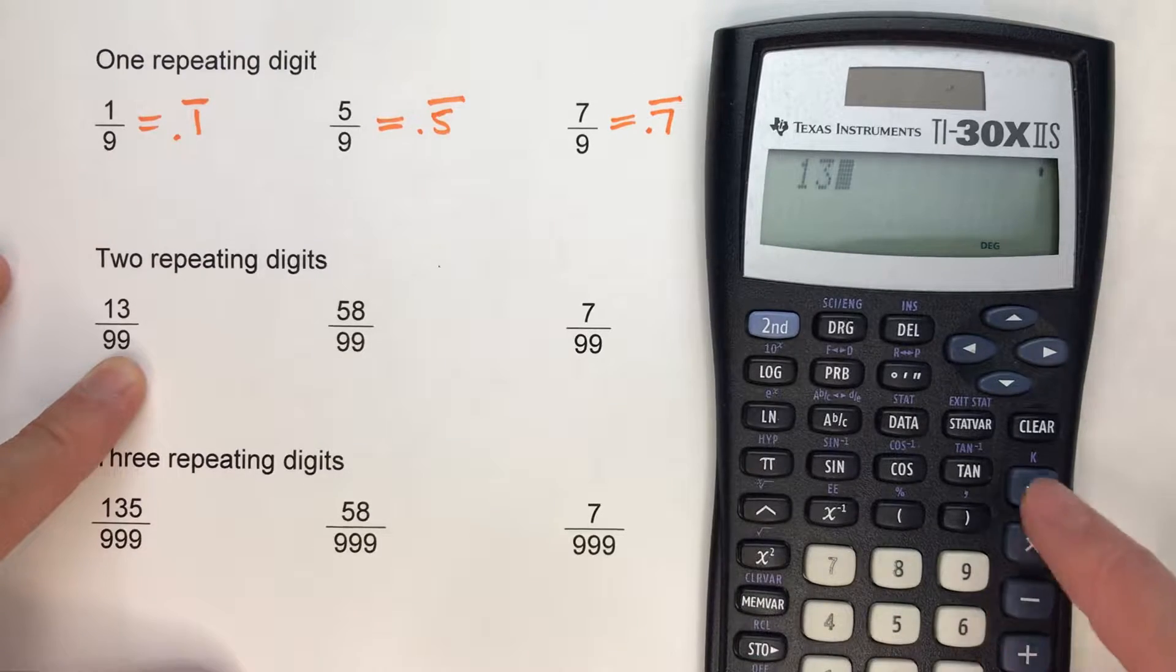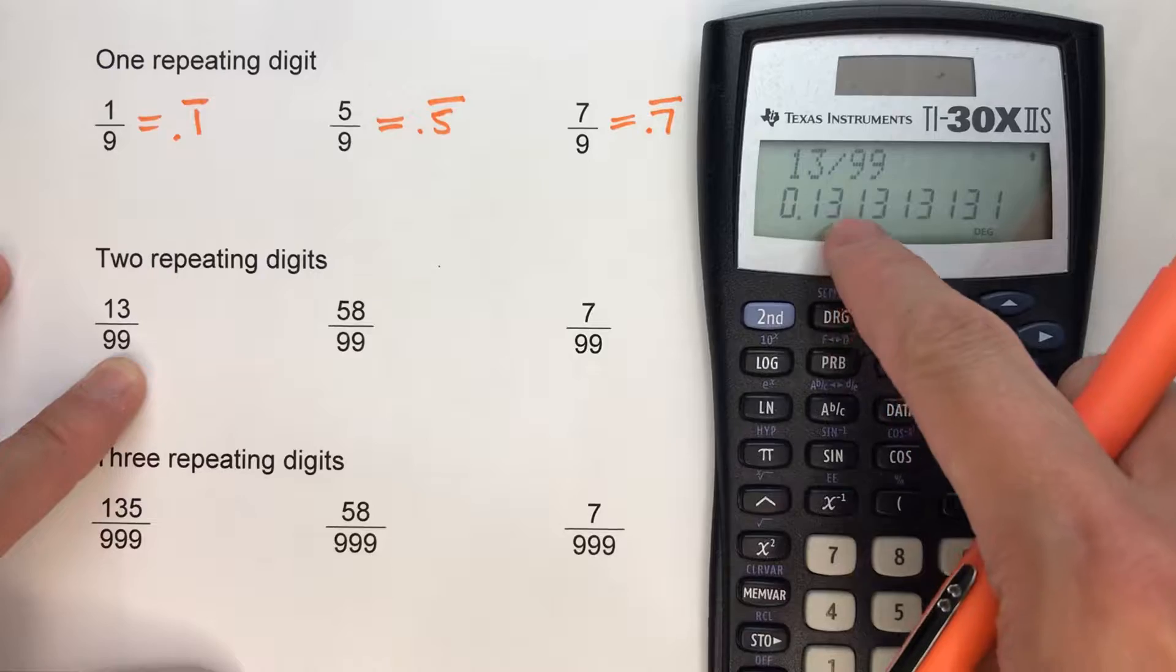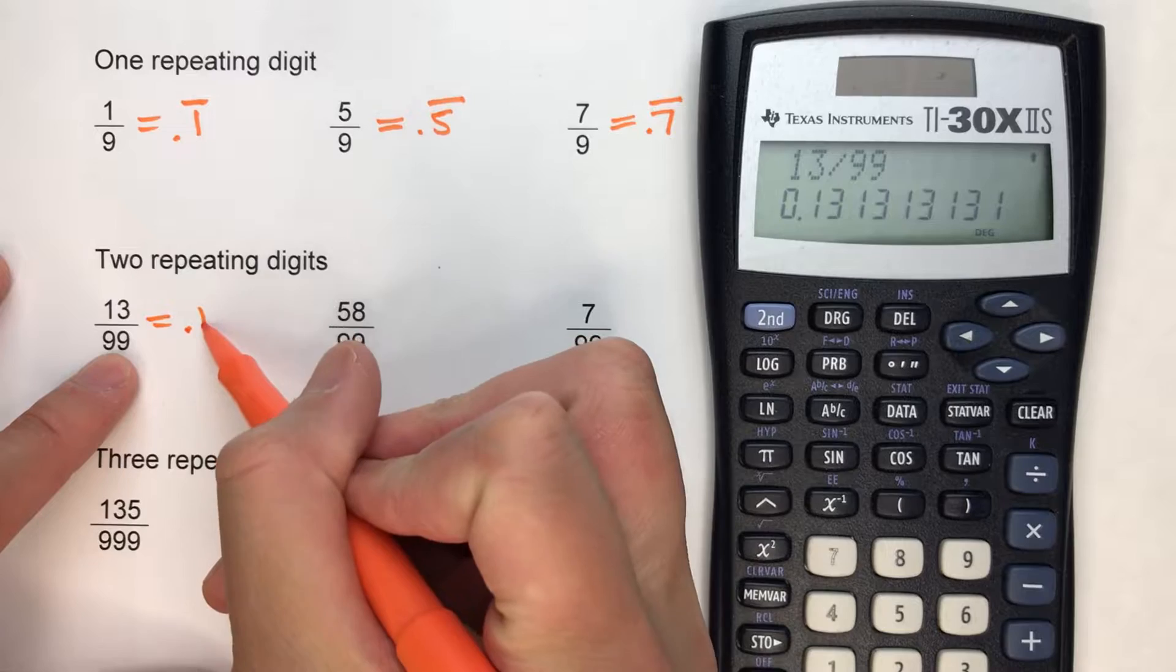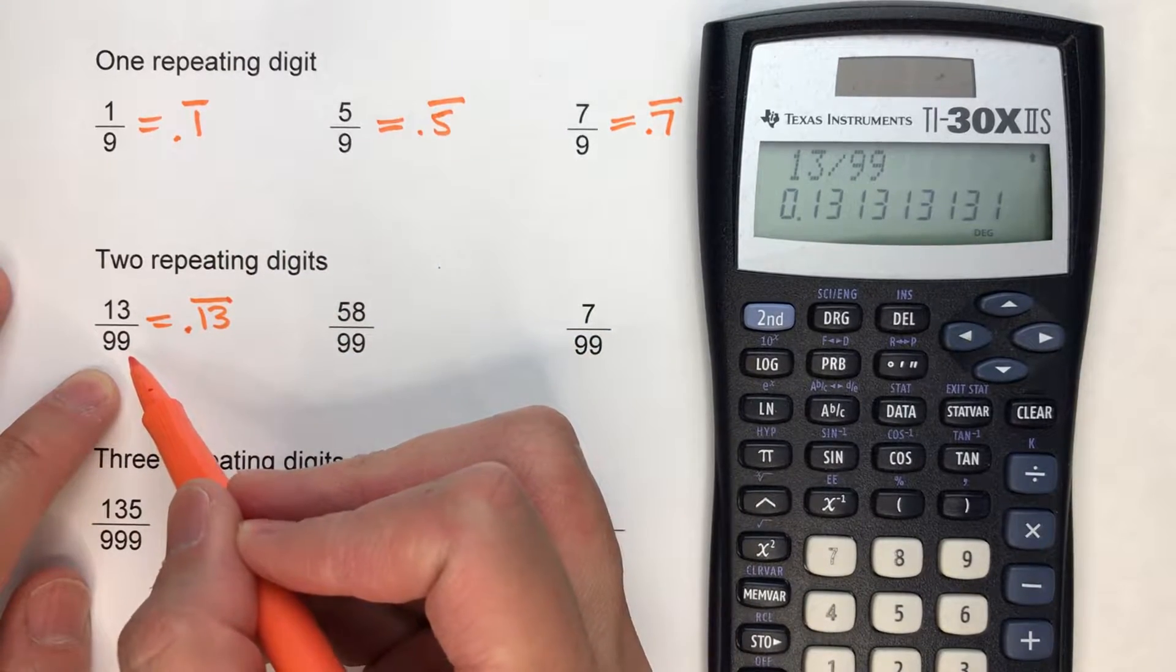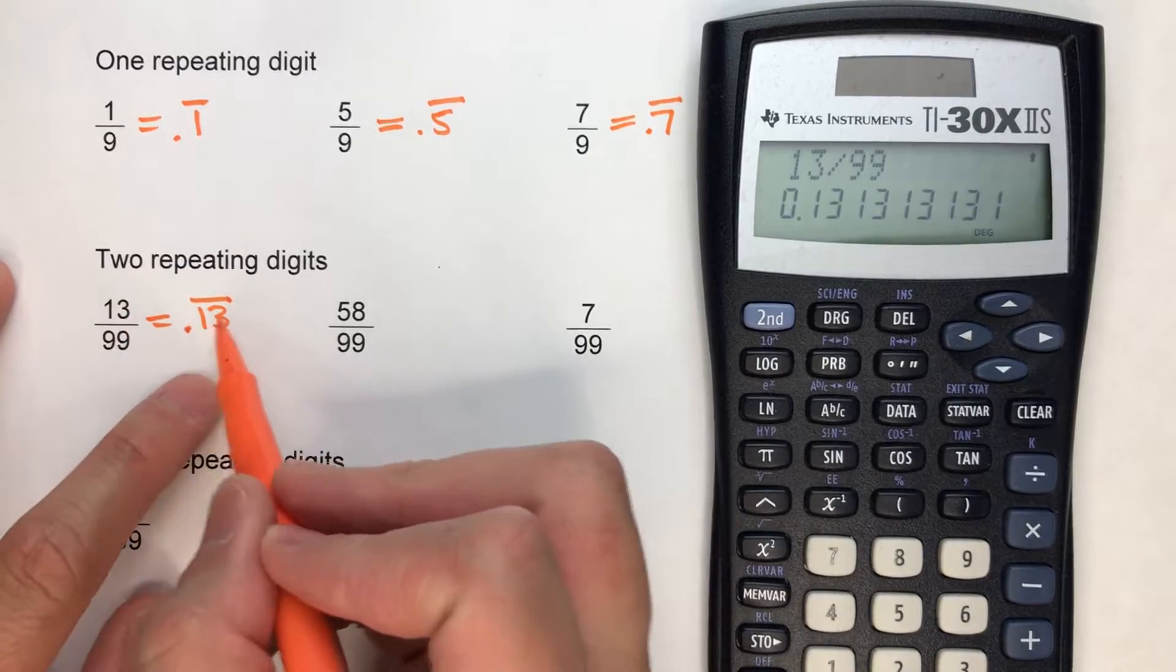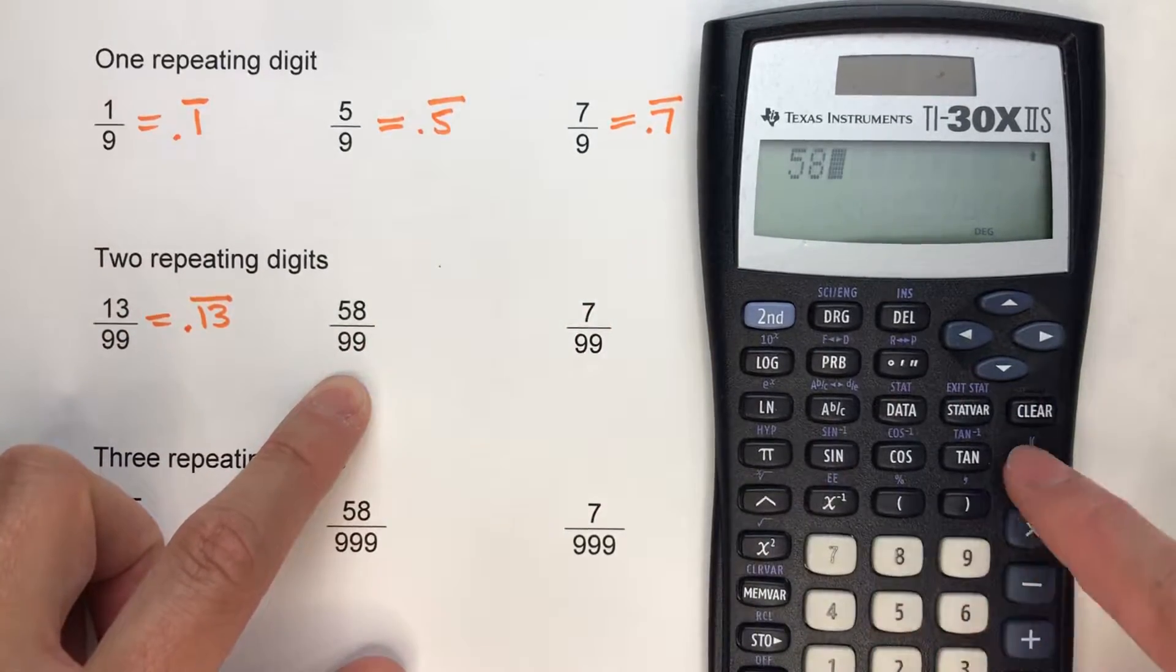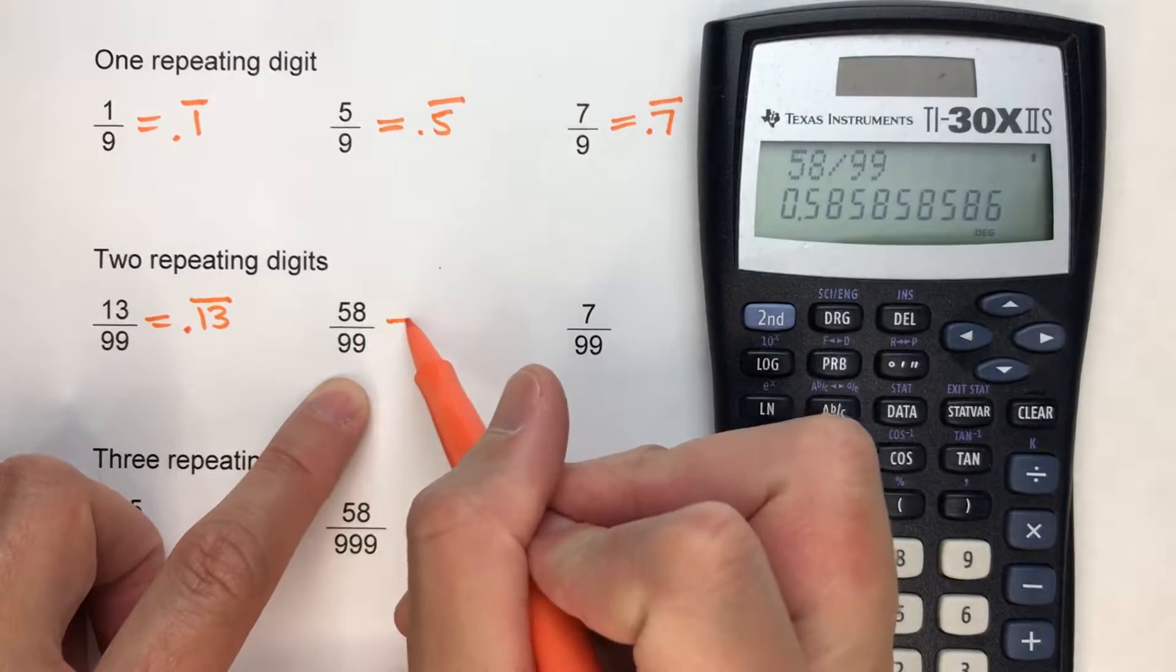13/99, if I use my calculator, you can see 0.131313. Notice, again, the numerator repeats. But this time, because it's 99 as my denominator, I've got two digits repeating. 58/99, same thing happens. We're going to repeat 585858.